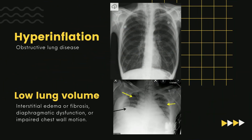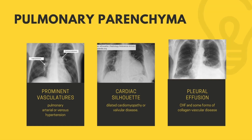A chest radiograph should be obtained after the history elicitation and the physical examination if diagnosis remains elusive. The lung volumes should be assessed — hyperinflation is consistent with obstructive lung disease, whereas low lung volumes suggest interstitial edema or fibrosis, diaphragmatic dysfunction, or impaired chest wall motion. The pulmonary parenchyma should be examined for evidence of interstitial disease, infiltrates, and emphysema. Prominent pulmonary vasculature in the upper zones indicates pulmonary venous hypertension, while enlarged central pulmonary arteries may suggest pulmonary arterial hypertension.